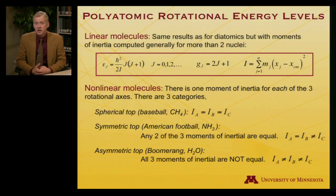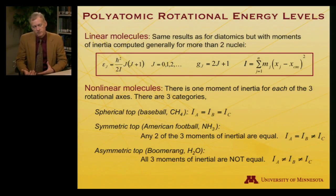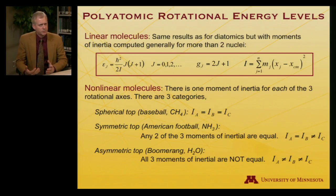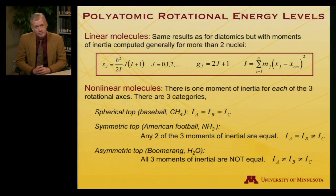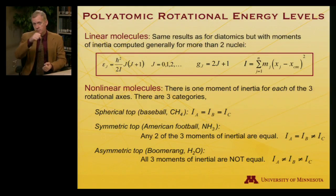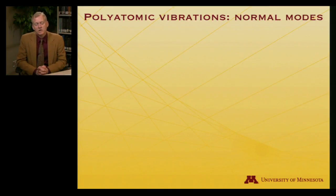When all three moments of inertia are different from one another, the molecule is called an asymmetric top — macroscopically analogous to a boomerang. Water, with its three atoms bent and oxygen in the middle, is an example of an asymmetric top. These different moments of inertia lead to complicated expressions for energy levels, which we won't write down here; instead we'll focus on the simpler linear case to make progress.